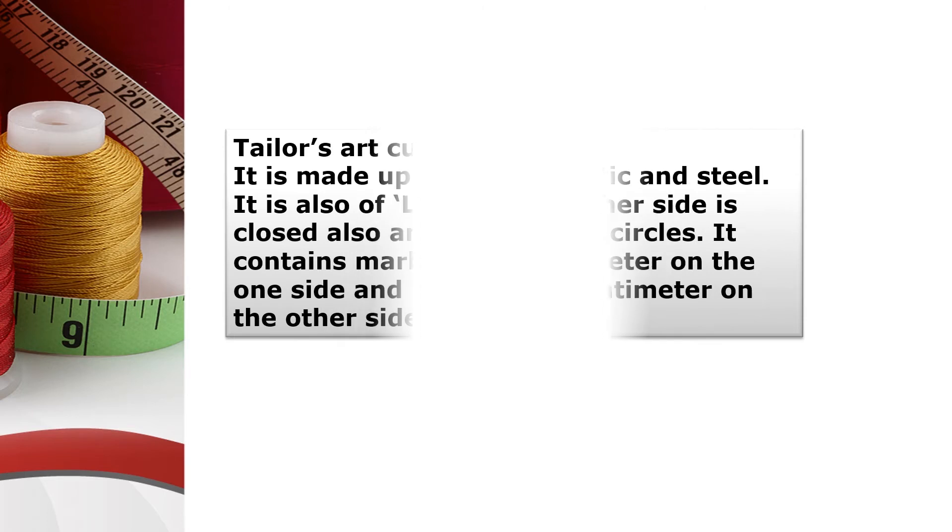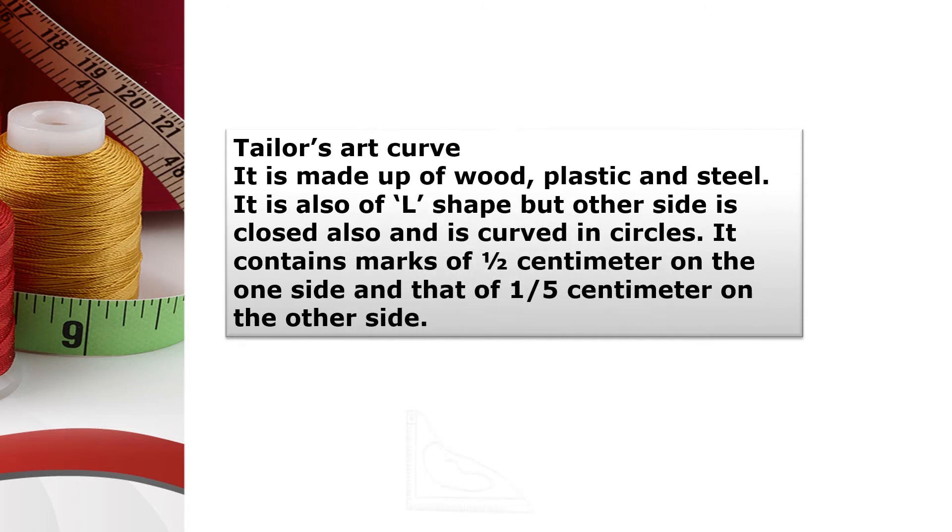Tailor's Art Curve is made up of wood, plastic, and steel. It is also of L-shape but the other side is closed and is curved in circles. It contains marks of half centimeter on one side and that of one by five centimeter on the other side.